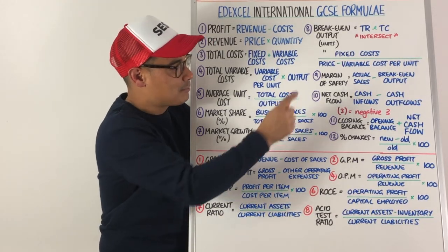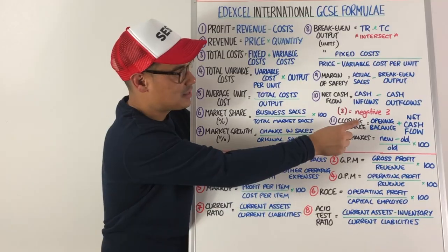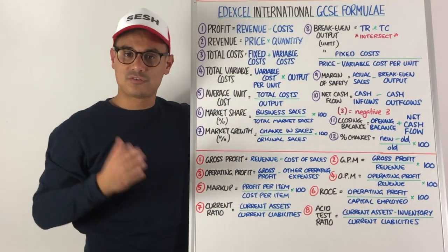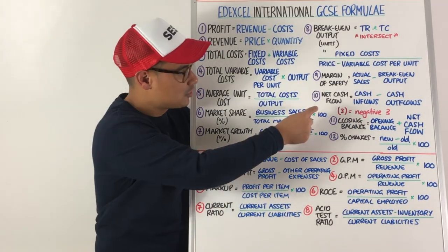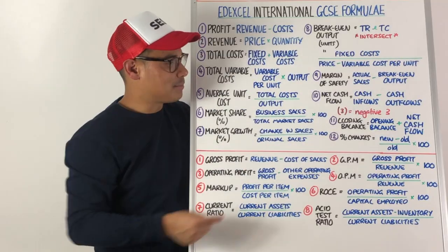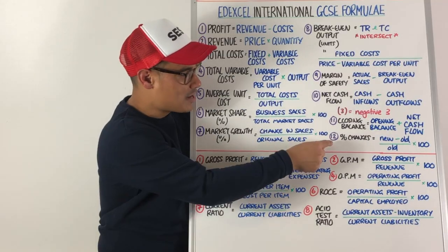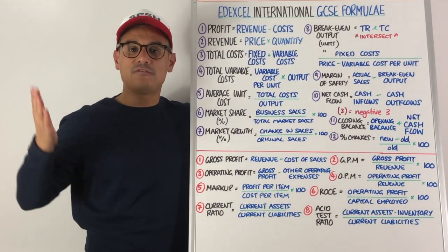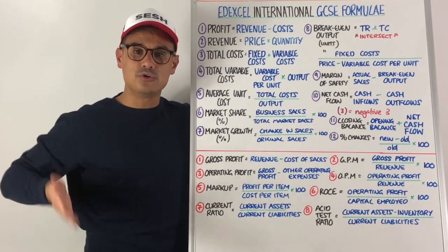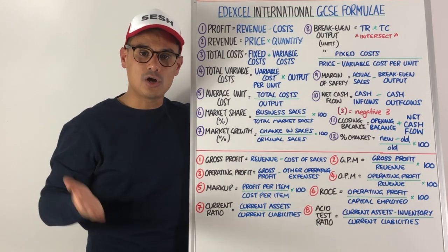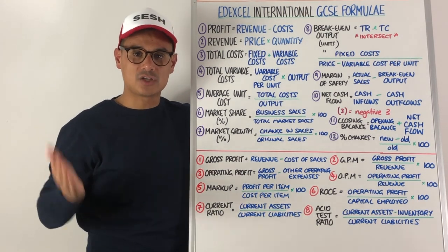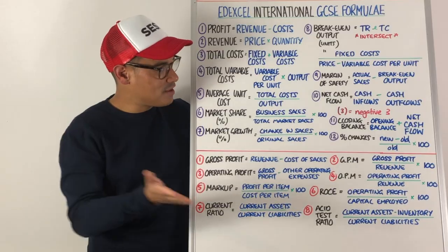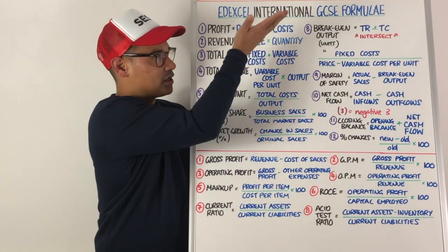Number eleven is closing balance. Closing balance is your opening balance plus your net cash flow. And number twelve is percentage changes — think new number minus old number, divided by old number, times by 100. Those are the formulas that you've got to learn.